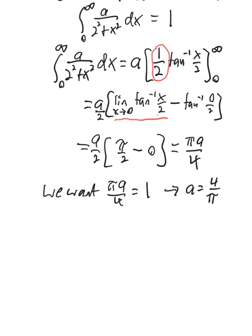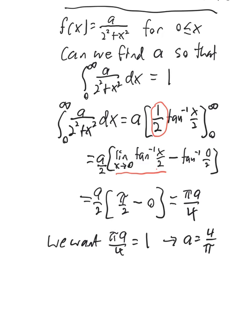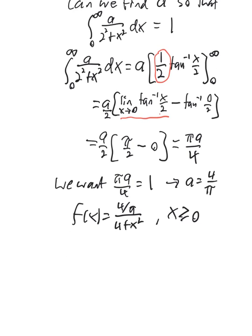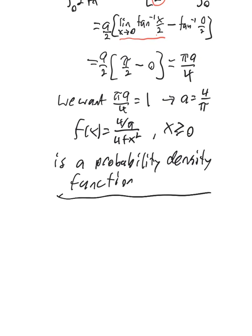So using that constant back in the original function, f of x equals (4 over pi) divided by (4 plus x squared), for x greater than or equal to 0. That is a probability density function. You've got homework problems along these lines — asking you either to show that something is a probability density function, or they'll have a constant a and ask you to figure out what a must be.